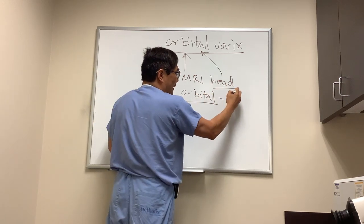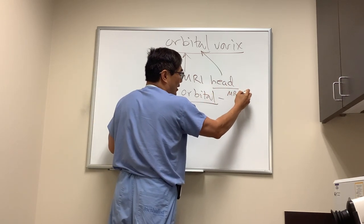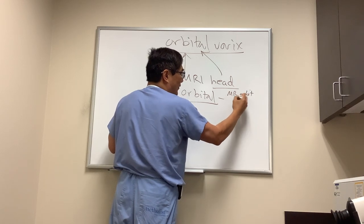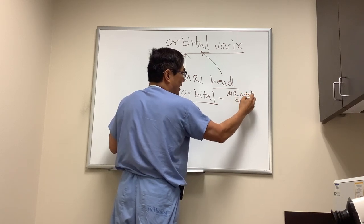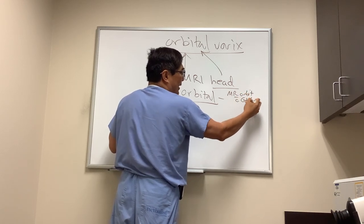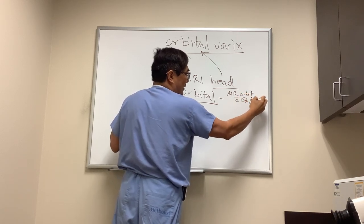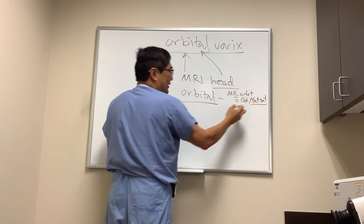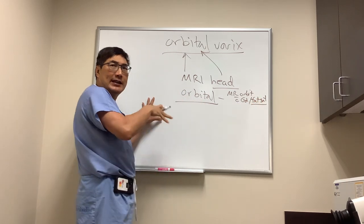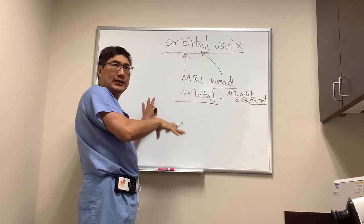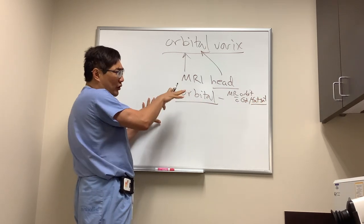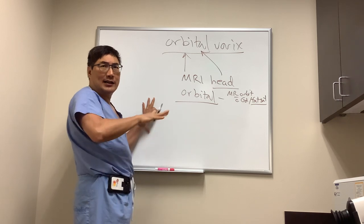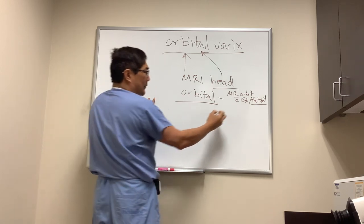For MRI, that means an MRI of the orbit, and we have to have gadolinium contrast as well as fat suppression sequences so that we can see the enhancement in the orbit. Otherwise the orbital fat will block the contrast enhancement.